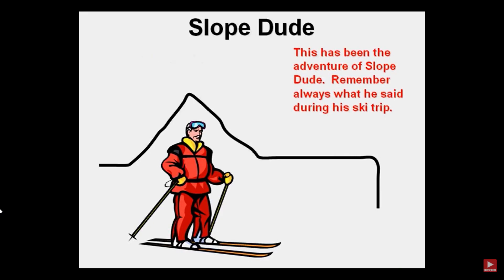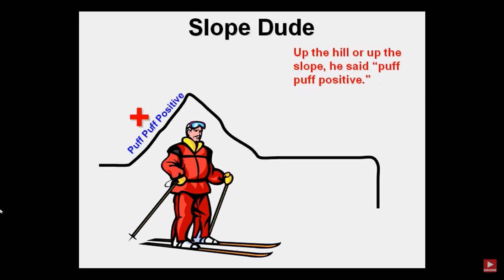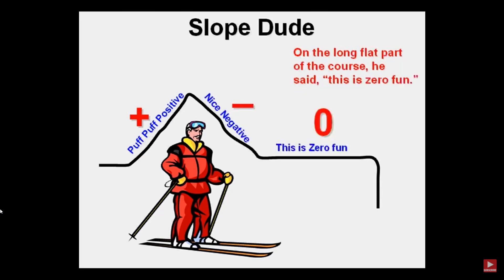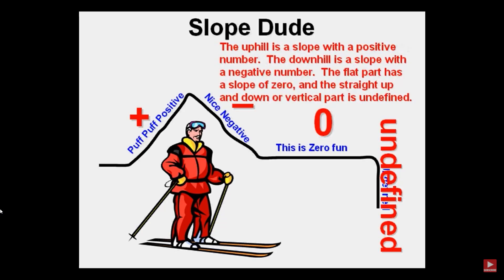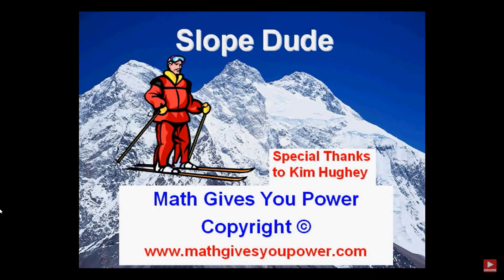Remember always what Slope Dude said during his ski trip: up the hill, he said 'puff, puff, positive.' On his downhill run, he said 'nice, negative.' On the long flat part, he said 'this is zero fun.' And finally, when he went over the vertical cliff, he yelled the worst curse word of math: undefined. The uphill is a positive slope, the downhill is a negative slope, the flat part is a slope of zero, and the vertical part is undefined.